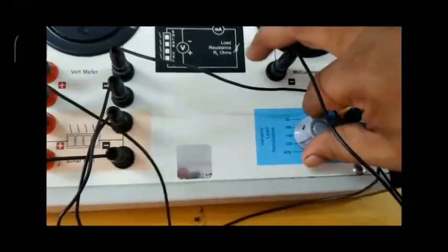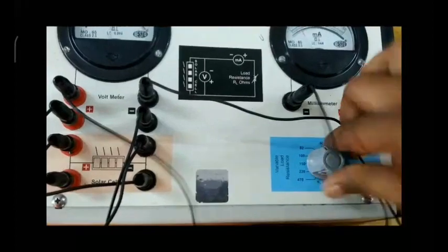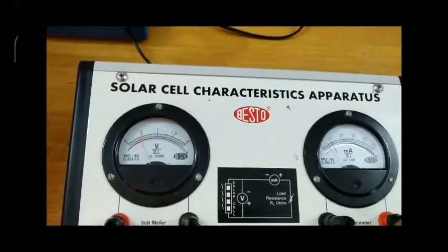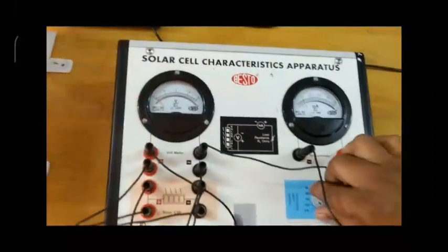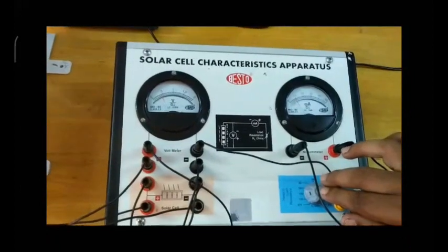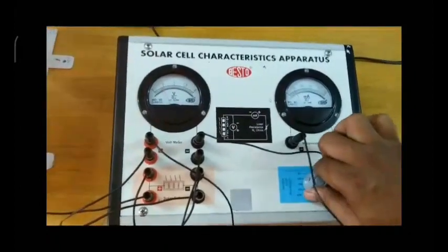So while rotating the knob, the voltage and current values will change. You can see. Change the resistance and note down the values of voltage and current.